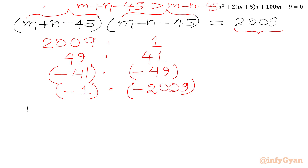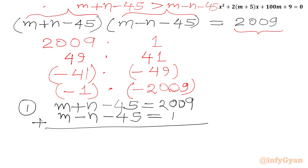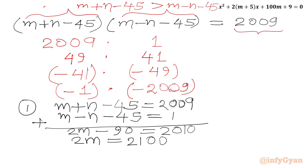We form four systems of equations. First system: m + n - 45 = 2009 and m - n - 45 = 1. Adding both equations: 2m - 90 = 2010, so 2m = 2100, giving m = 1050.